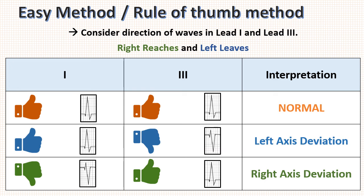Similarly, if the direction of waves in lead 1 are positive and in lead 2 are negative, they are leaving each other. So this is left axis deviation. Remember friends, this method is easy and short but less accurate compared to the first method.